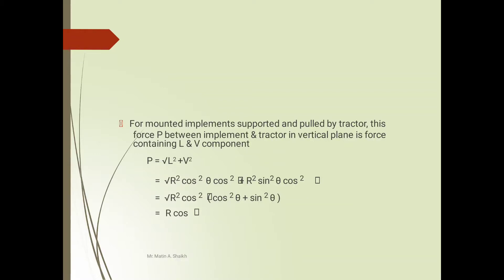We will get the value: square root of R square cos square θ cos square φ plus R square sin square θ cos square φ. We also know the value of vertical component V equals R sin θ cos φ. Further we modify this equation. We take common R square cos square φ in bracket, remaining values are cos square φ plus sin square θ. Modifying this equation, we get the final equation: R cos φ.